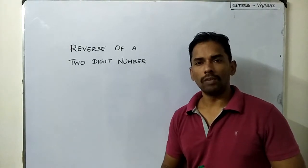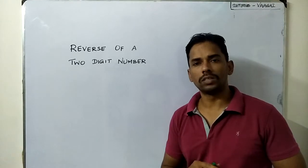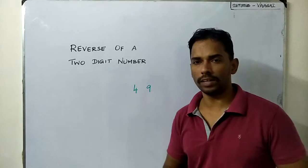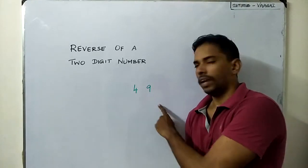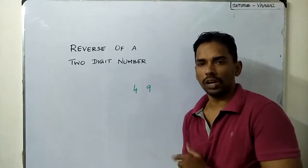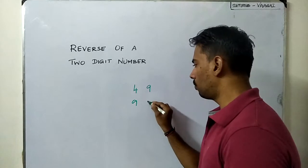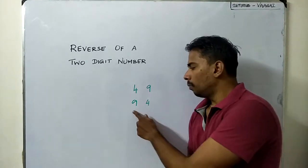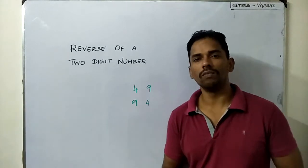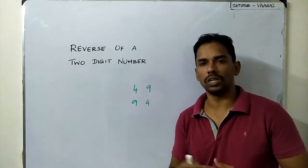We have a two-digit number and we are going to write it in reverse order. For example, take the two-digit number 49. If we reverse this number, the 9 comes first and the 4 comes next, giving us another two-digit number, 94. In this session, we are going to see some properties of what happens when we reverse a two-digit number.